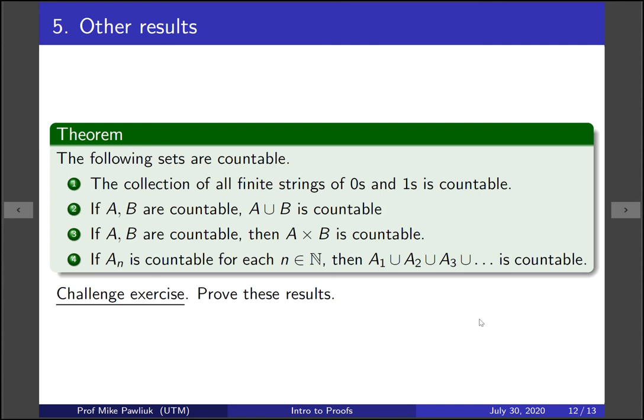Here are some other theorems that we won't prove, but we'll leave them as challenging exercises for you. Show that the collection of all finite strings of zeros and ones is countable. Put another way, all binary numbers are countable. If A and B are both countable, then their union is countable. If A and B are both countable, then their Cartesian product is countable. And if A1, A2, A3, A4, etc. are all countable sets, then the union of all of them is countable.